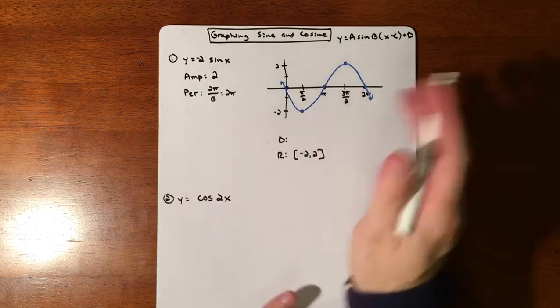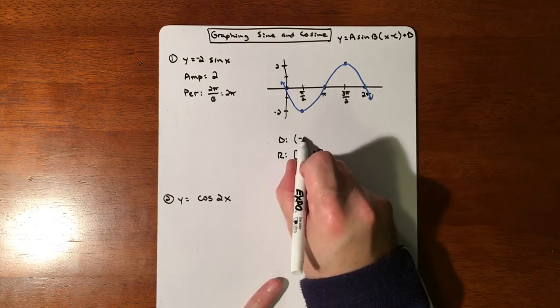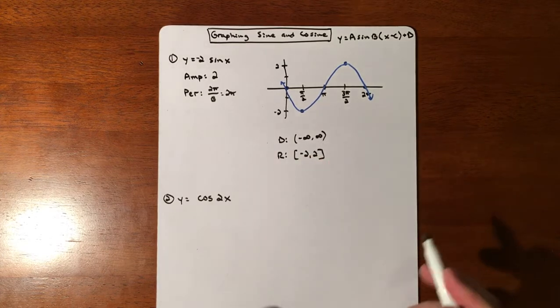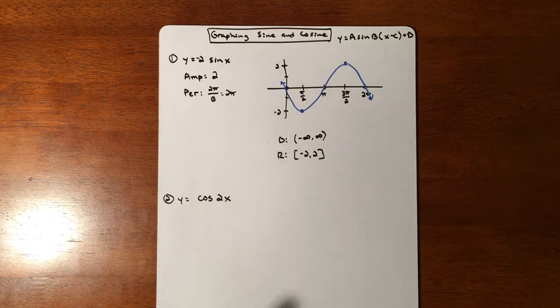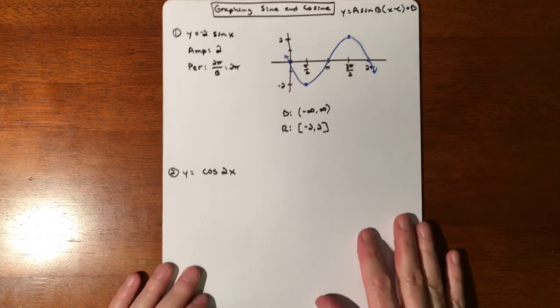And then this graph would fluctuate on and on and on from there. Domain on this—domain on all sines and cosines are gonna be negative infinity to infinity because it goes left and right forever.